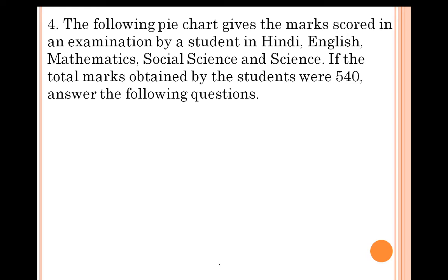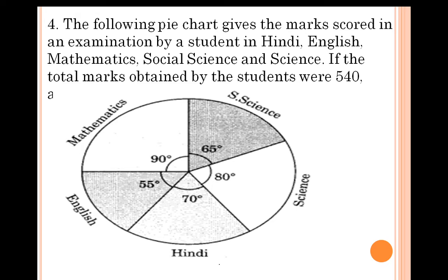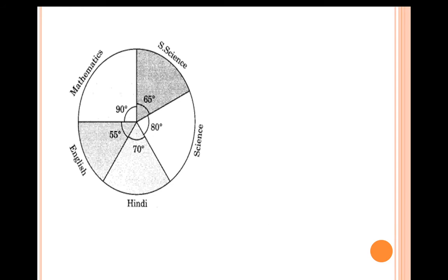Question 4: The following pie chart gives the marks scored in the examination by a student in Hindi, English, Mathematics, Social Science, and Science. The total marks obtained by the student were 540. From the pie chart: Social Science is 65 degrees, Science is 80 degrees, Hindi is 70 degrees, English is 55 degrees, and Mathematics is 90 degrees.